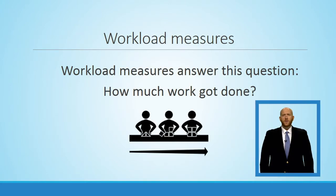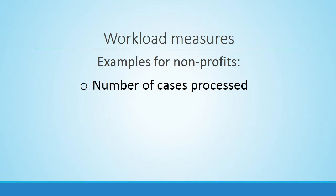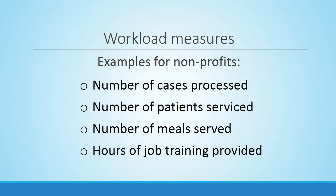Workload measures answer the question: how much work got done? In the private sector, an easy way to think about this is an assembly line. A company that produces car batteries would measure the number of batteries coming off the assembly line. For nonprofits, a workload measure could be the number of cases processed, the total number of patients served, the total number of meals served, or the total number of hours of training provided. The idea is to quantify how much work is being done.